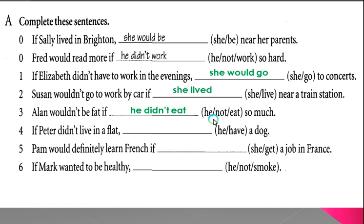Number four: 'If Peter didn't live in a flat, he would have a dog.' Number five: 'Pam would definitely learn French if she got the job in France.' Number six: 'If Mac wanted to be healthy, he wouldn't smoke.'